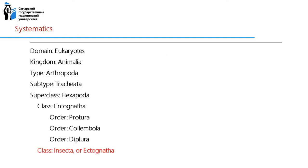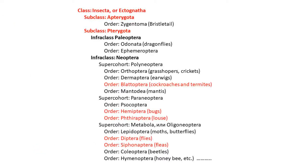The systematic position of insects: Eukaryotes, kingdom Animalia, type Arthropoda, subtype Tracheata, superclass Hexapoda. The class Insecta includes many orders, some of which are shown on the screen.